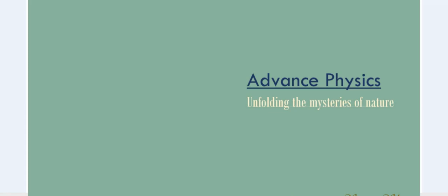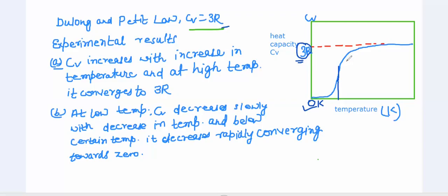Today in this second lecture in the condensed matter physics series, we will discuss the experimental results related to heat capacity and Dulong and Petit's Law. As you can see in this graph, this is the experimental result of heat capacity as a function of temperature. As temperature increases, heat capacity increases, and at higher temperature it converges to the constant value 3R.